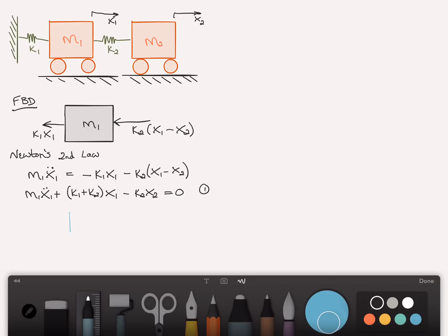Then looking at mass two, we see just an equal and opposite force on this side which we'll call K2, as before, X1 minus X2. The only difference is the sign of the arrow now.